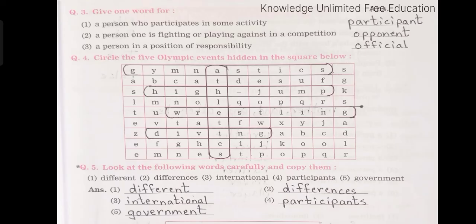Question number 5: Look at the following words carefully and copy them. The words here are: different, differences, international, participants and government.